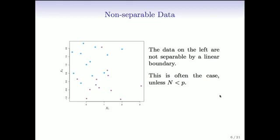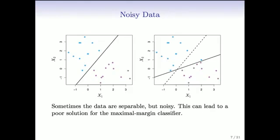On the other hand, for a lot of high-dimensional data, like in genomics and other kinds of problems, the number of sample points is less than the dimensions. And in general, when the number of sample points is less than the dimensions, you can always separate the data with a hyperplane. But when N is much bigger than P, typically not. So that's a problem we need to deal with.